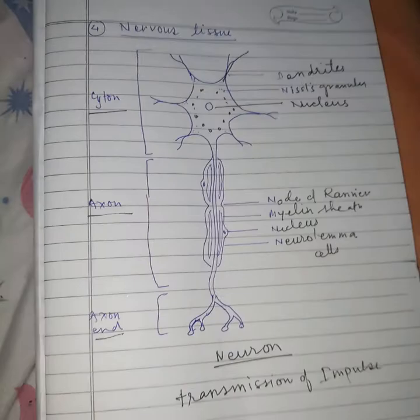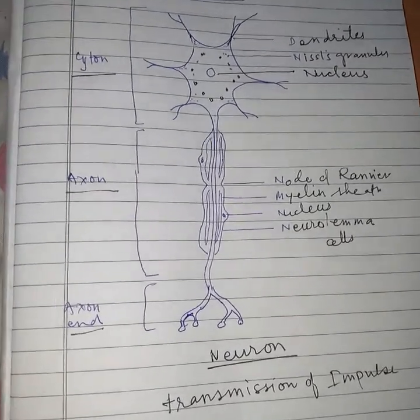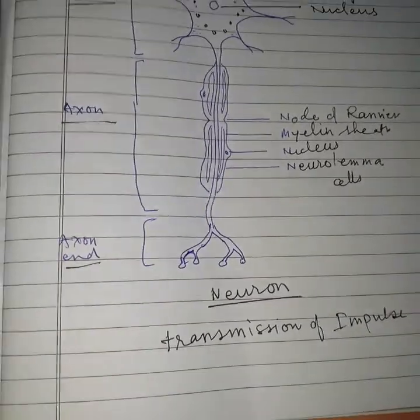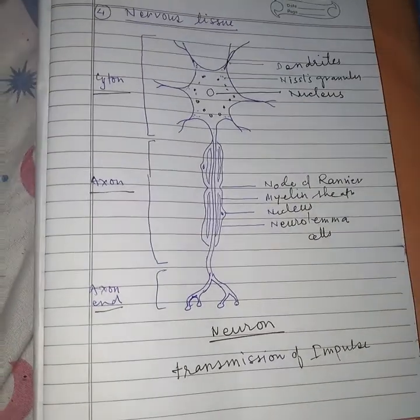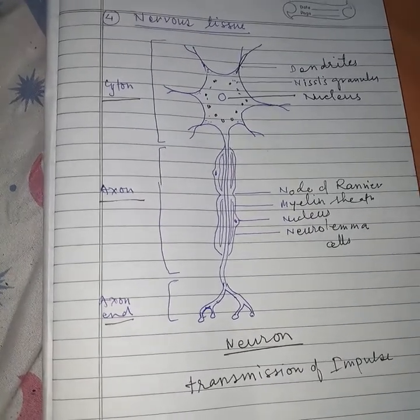So the cytones and nervous tissue help in the transmission of impulses. That's all for today. Have a good day.